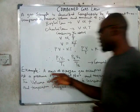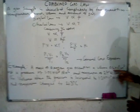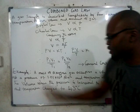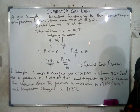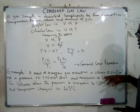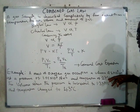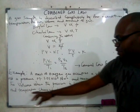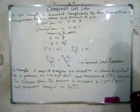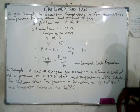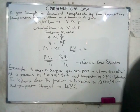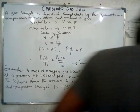Now we have a problem: a mass of oxygen gas occupies a volume of 2 × 10⁴ cm³ at a pressure of 1.01 × 10⁵ N/m² and a temperature of 27°C. Calculate the volume when the pressure is increased to 1.35 × 10⁵ N/m² and the temperature changes to 43°C.